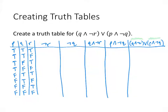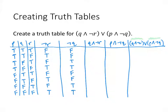Now we fill in left to right, simplest to most complex. NOT R is just the reverse of the R column: where R is T F T F T F T F, NOT R becomes F T F T F T F T. NOT Q is similarly the opposite of the Q column: where Q is T T F F T T F F, NOT Q becomes F F T T F F T T.